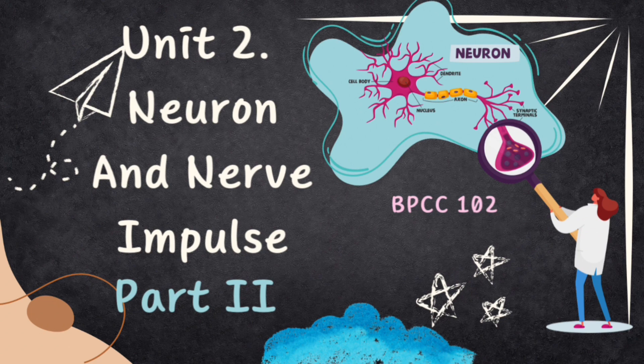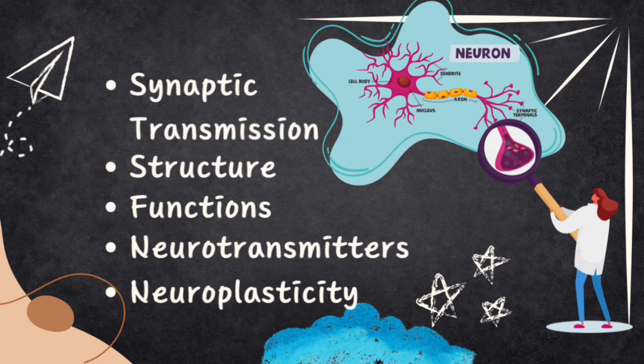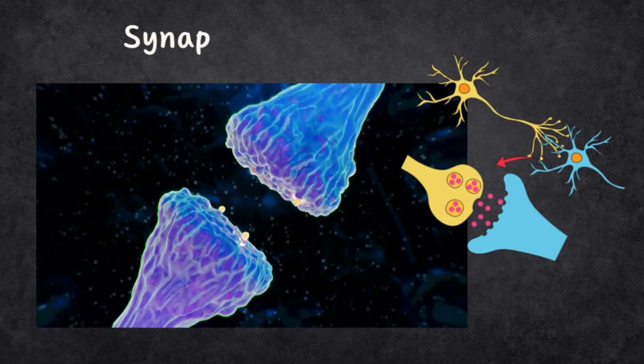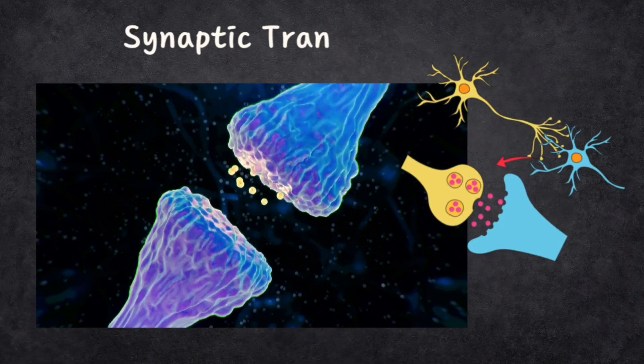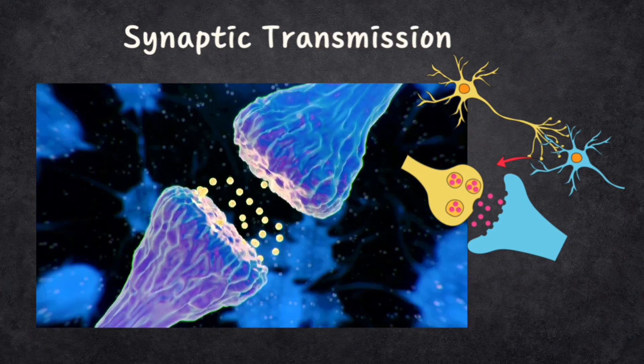In this series, BPCC 102, today we are covering the second part of the second chapter: Neurons and Nerve Impulse. Today we will talk about synaptic transmission, the structure and functions of a synapse, neurotransmitters, and neuroplasticity. Let's begin with synaptic transmission. Imagine neurons are like people passing notes in a classroom — they need a way to share information, and that's where synapses come in.